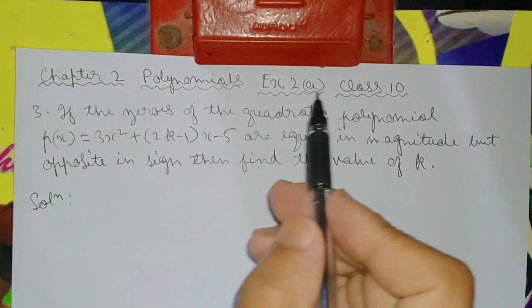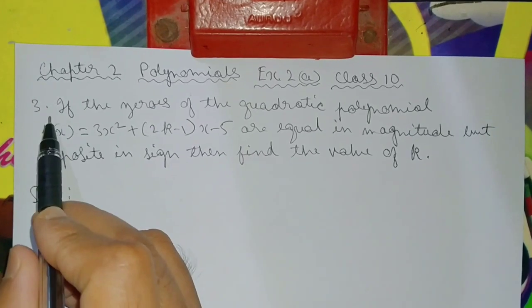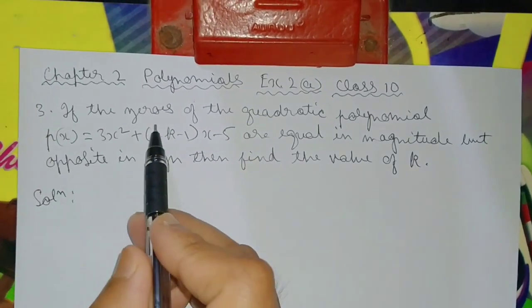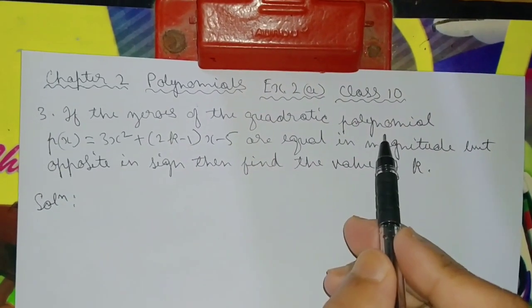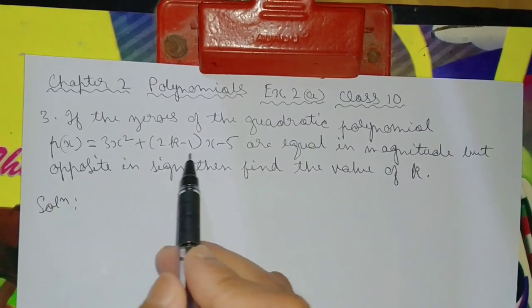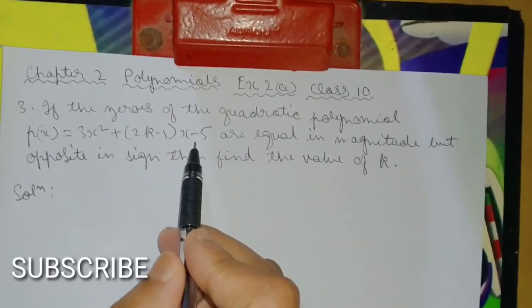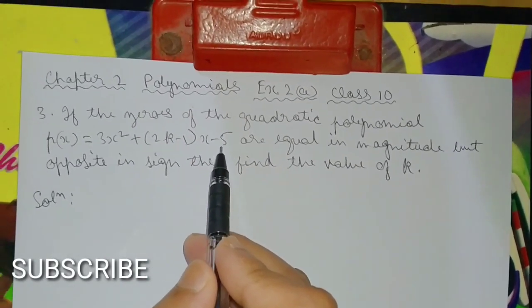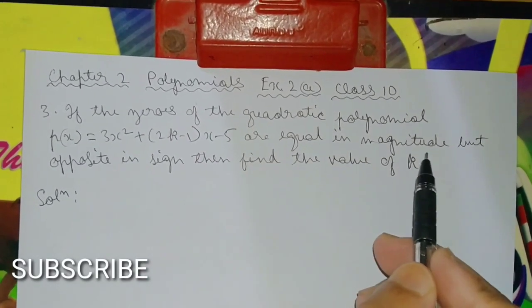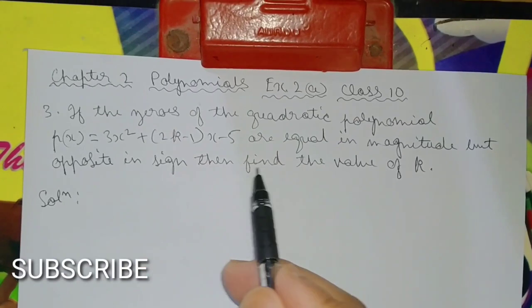Chapter 2, Polynomials, Exercise 6x2A. Class 10, Question number 3: If the zeros of the quadratic polynomial P(x) = 3x² + (2k - 1)x - 5 are equal in magnitude but opposite in sign,